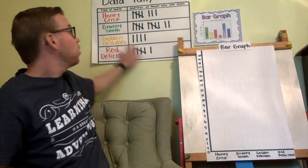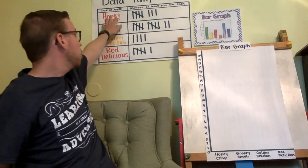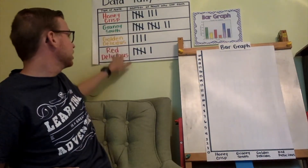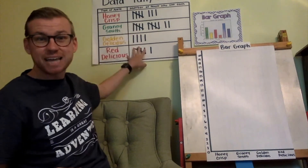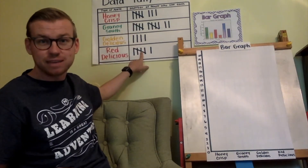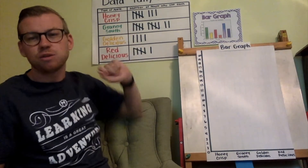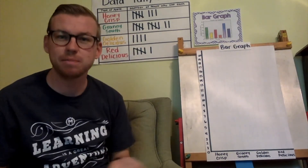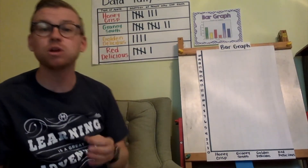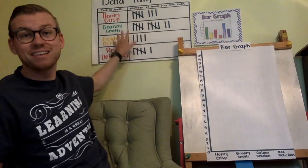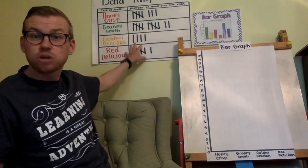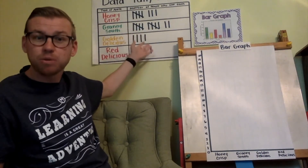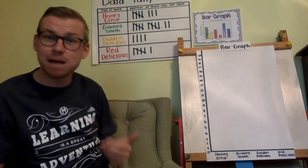The four apples I chose were Honeycrisp, Granny Smith, Golden Delicious, and Red Delicious, and I have some tallies next to them. Before we get going at making the graph, we want to interpret this data first to determine how many people liked each apple.